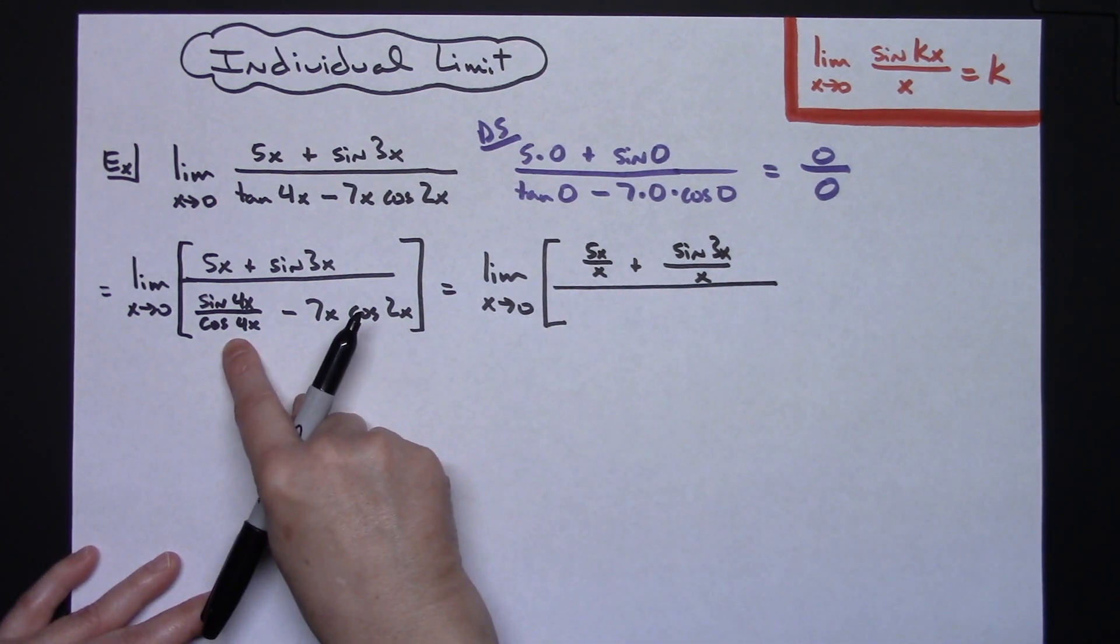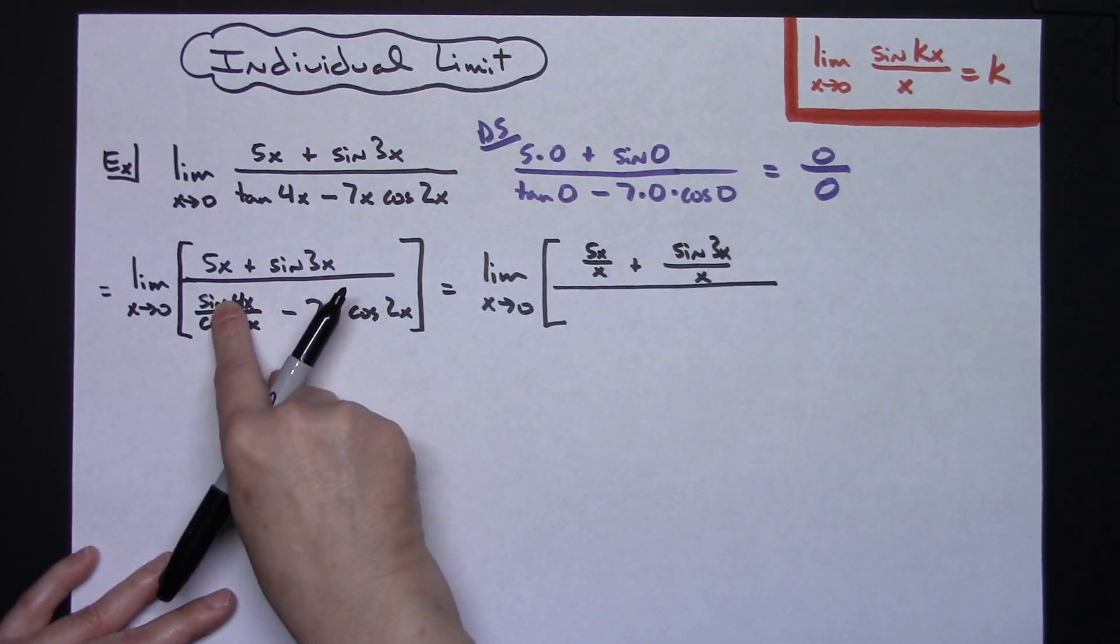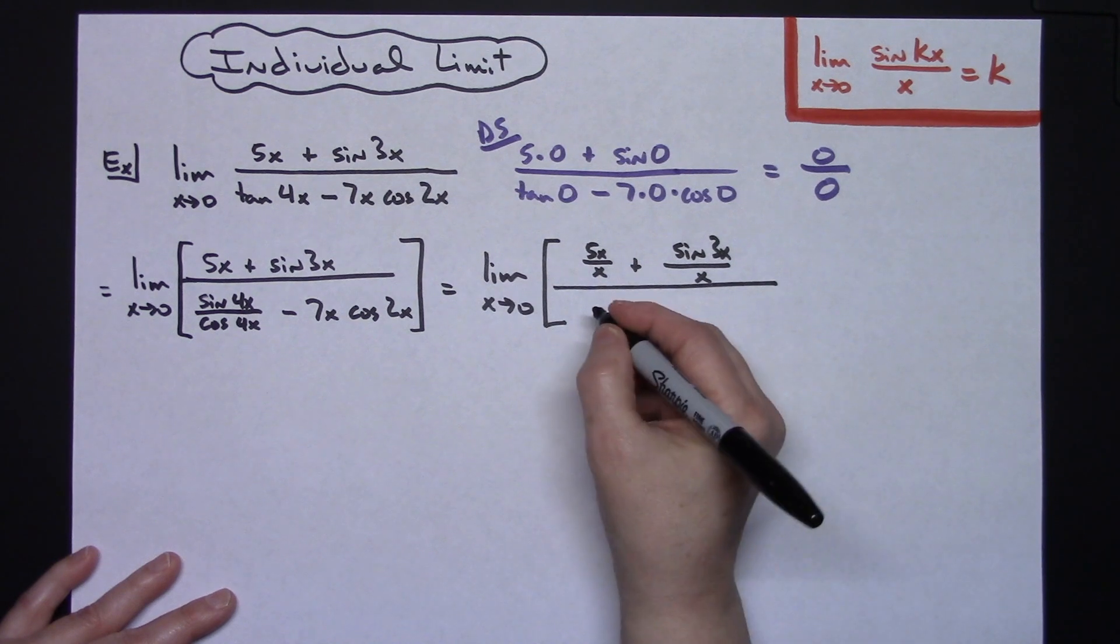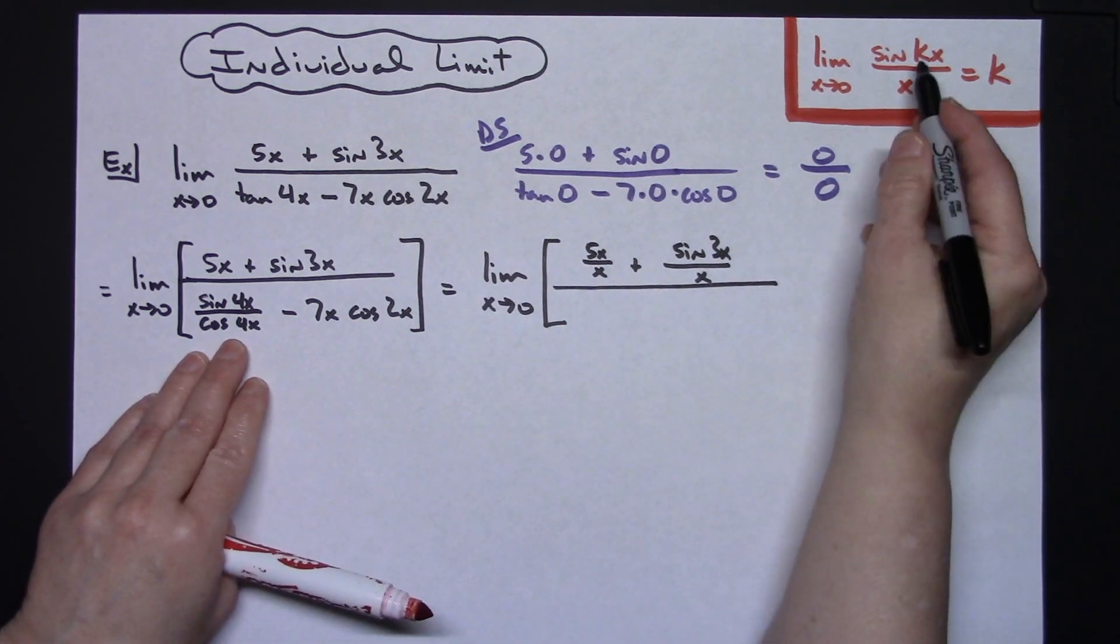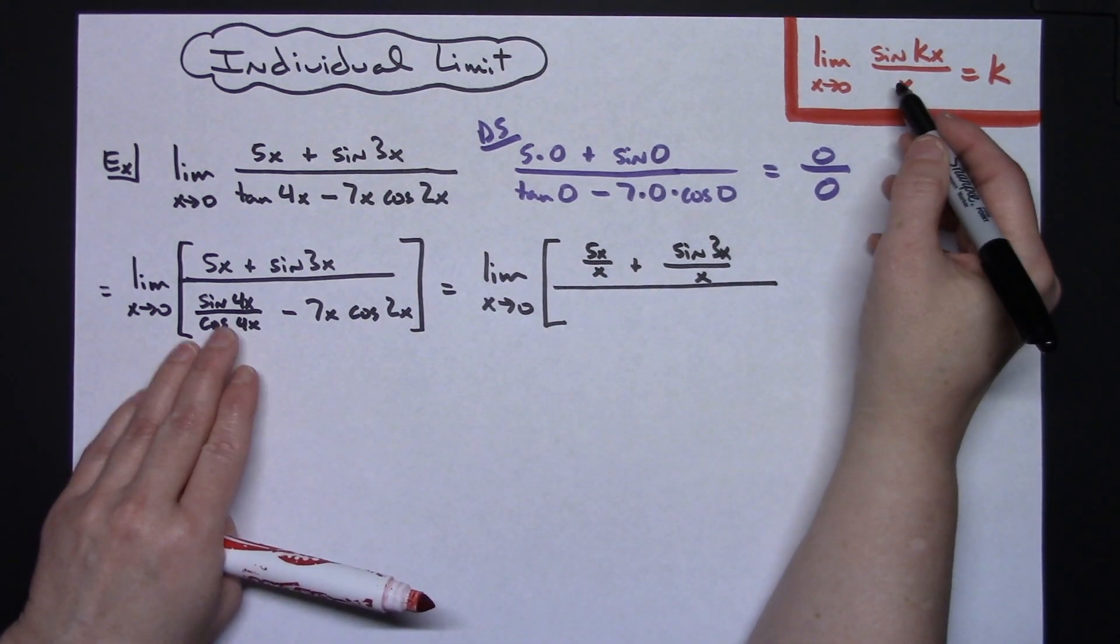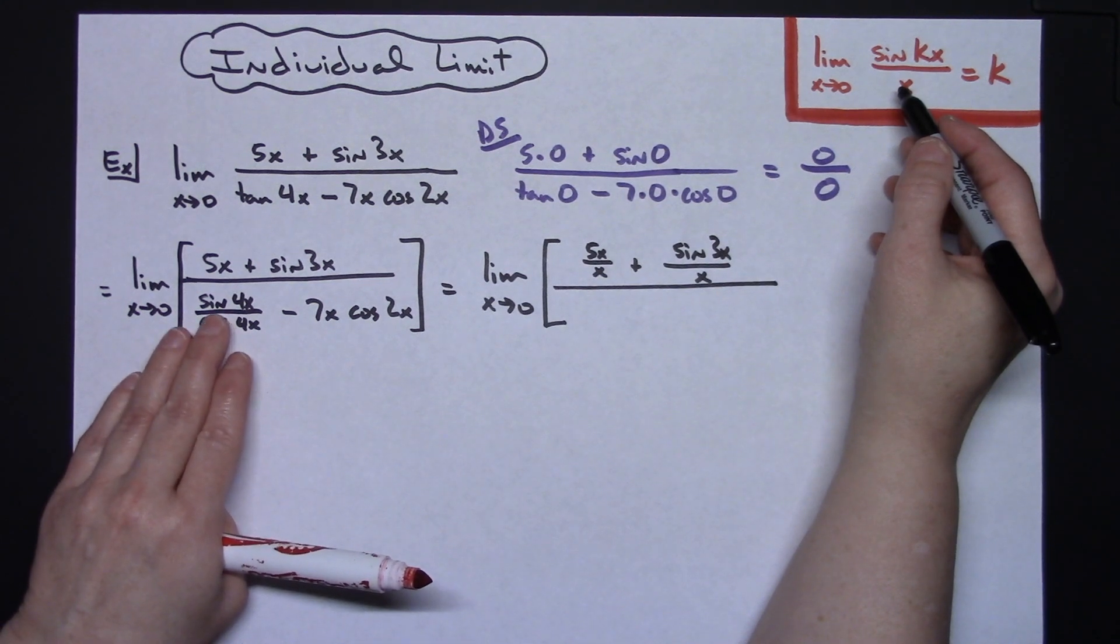In this denominator here, I'm going to break this up so that I can show the division by x a little bit easier. And I know I want this so I'm going to put the x under the sine of 4x.